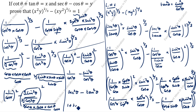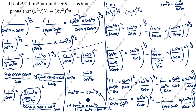Using the identity 1 plus tan squared theta equals secant squared theta, we get secant squared theta minus tan squared theta equals 1. Therefore LHS equals RHS, hence proved. Thanks for watching this video.